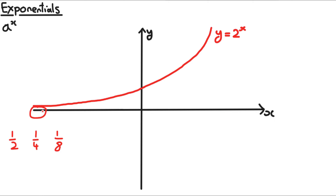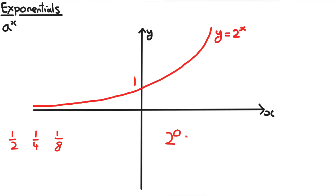It will just get smaller and smaller and will never be negative because a power cannot be negative. And it crosses the y-axis at 1 because anything to the power of 0, when x is 0, is equal to 1.